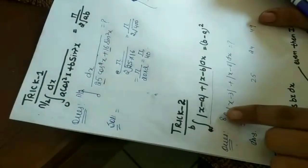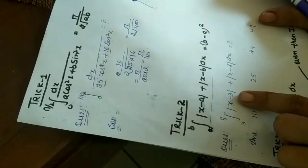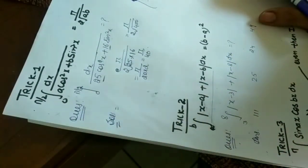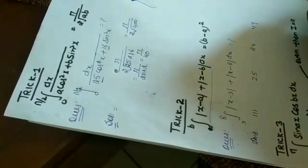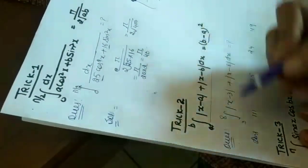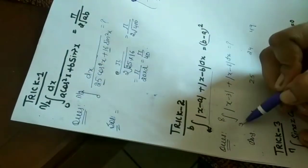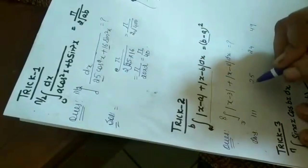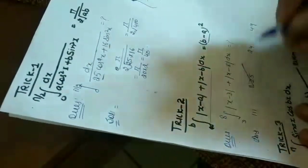Example: integration from 3 to 8 mod of x minus 3 plus mod of x minus 8 dx. The answer is b minus a, that is upper limit minus lower limit, 8 minus 3 is 5, whole square, that is 5 into 5, which equals 25.